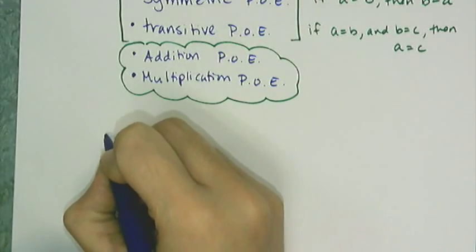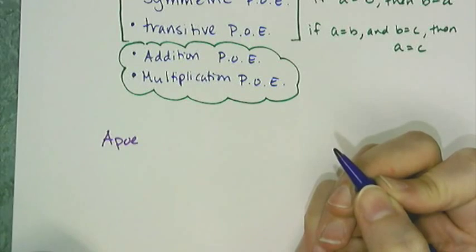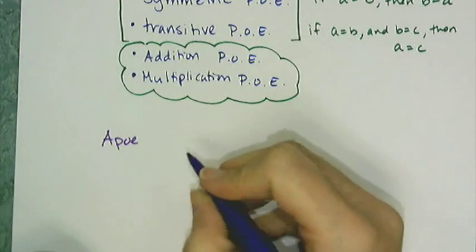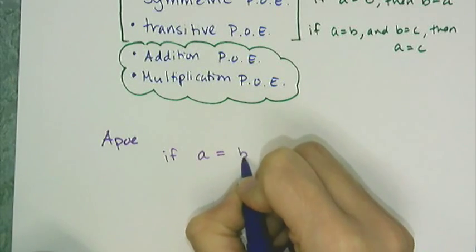So first let's talk about what the addition property of equality says. We're going to call it APO, because I don't want to keep writing addition property of equality. It says that if I'm given some equation, like where A equals B,